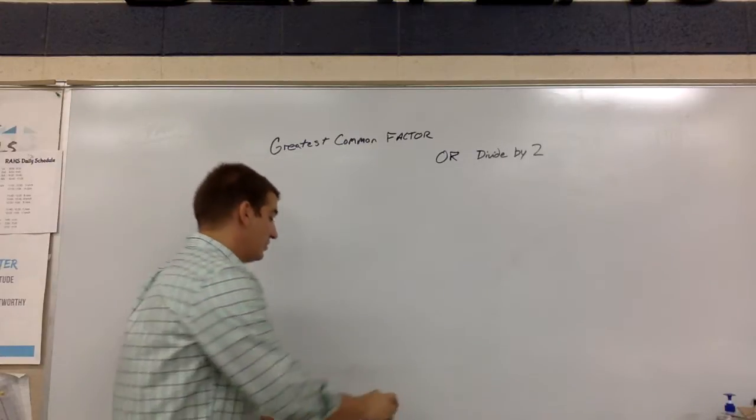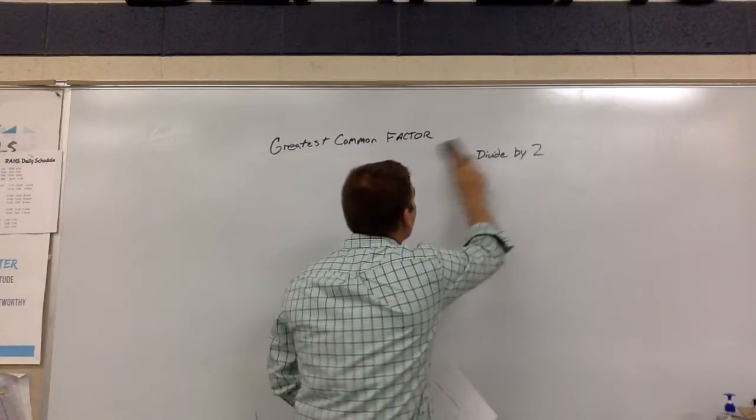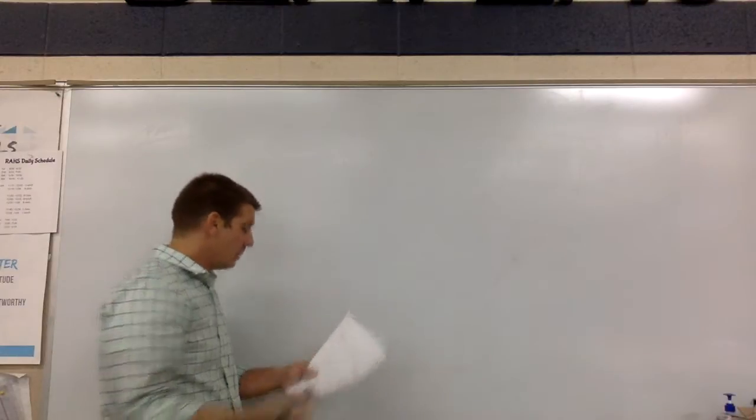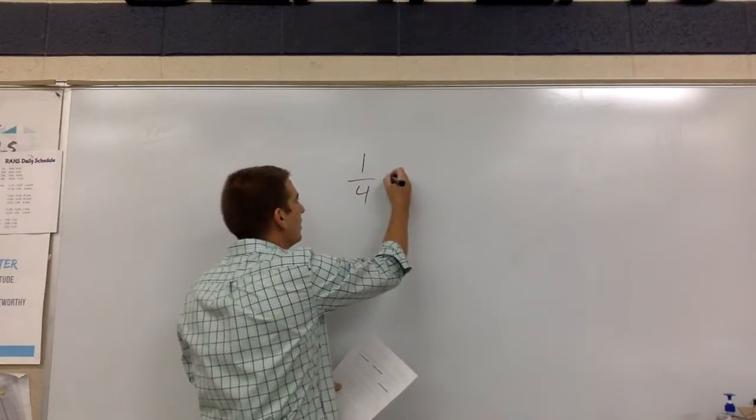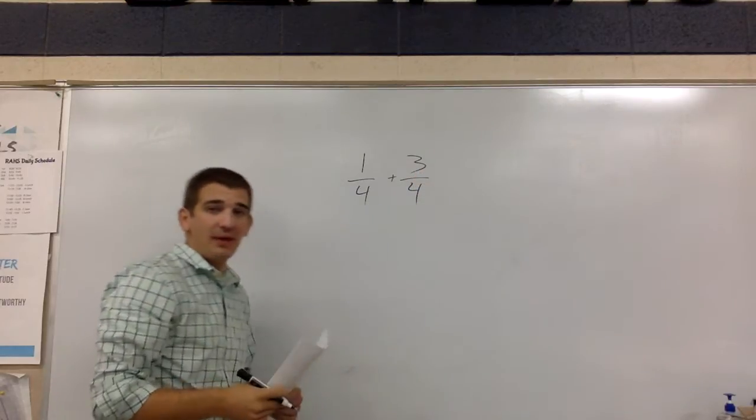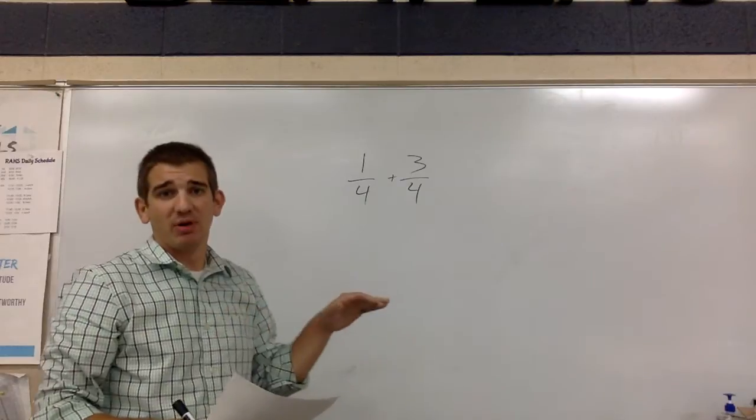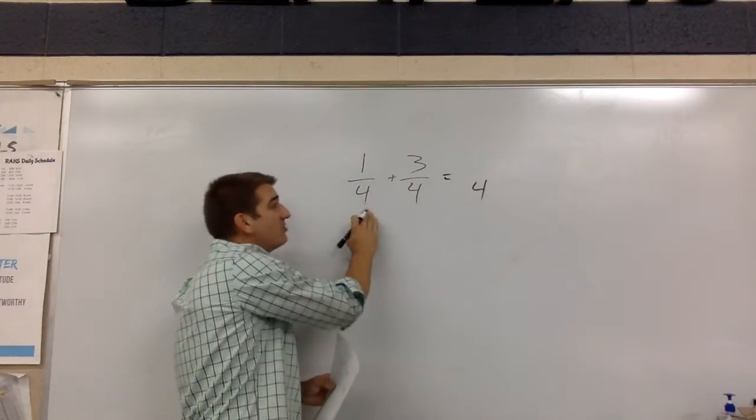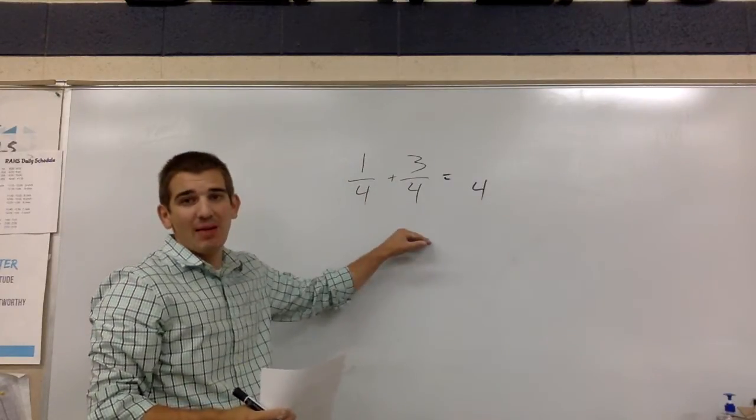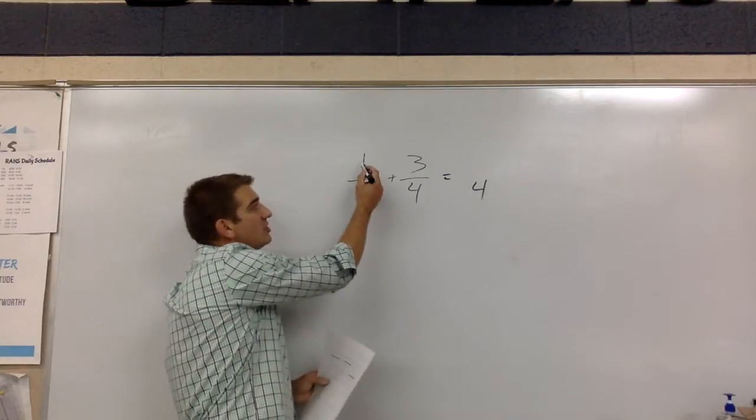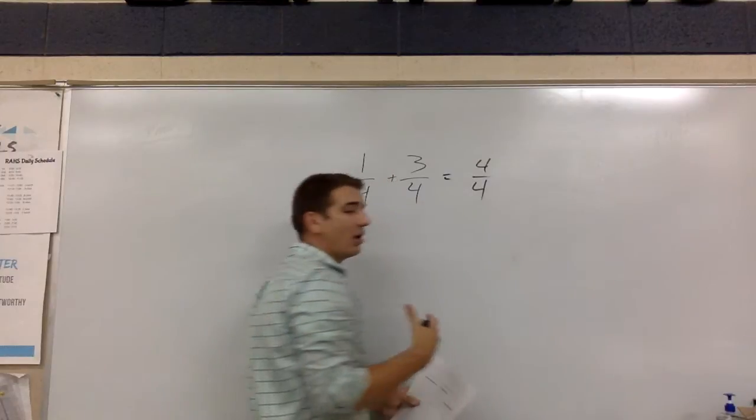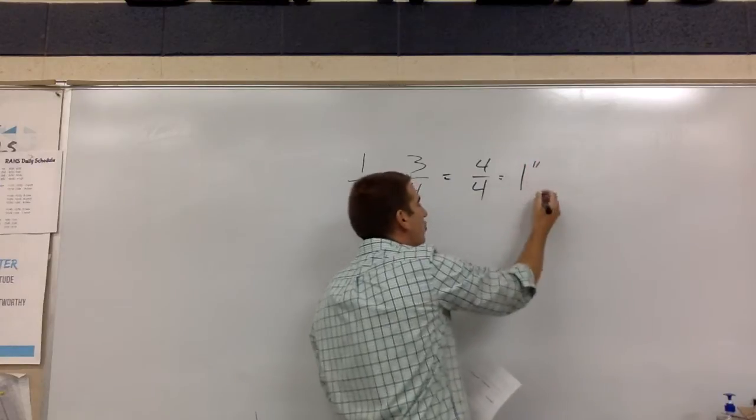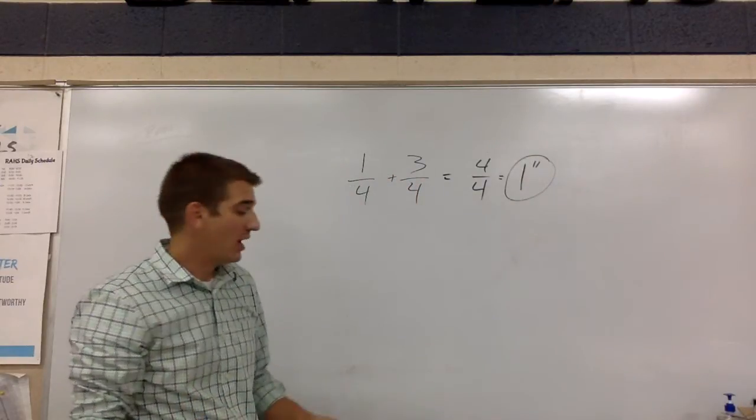Now for adding fractions, let's do number 16 together. We have 1 fourth and 3 fourths. This one ain't too bad. When your denominators are the exact same, that's perfect. It takes a step out of it compared to if they were different. Remember, when we are adding or subtracting fractions, your bottom number, your denominator, is going to stay the same no matter what. Then we just add the top, 1 plus 3 gives us 4 fourths. Four fourths, 4 quarters is a dollar, and 4 quarters is just 1 inch. So that's all we would want for that one.